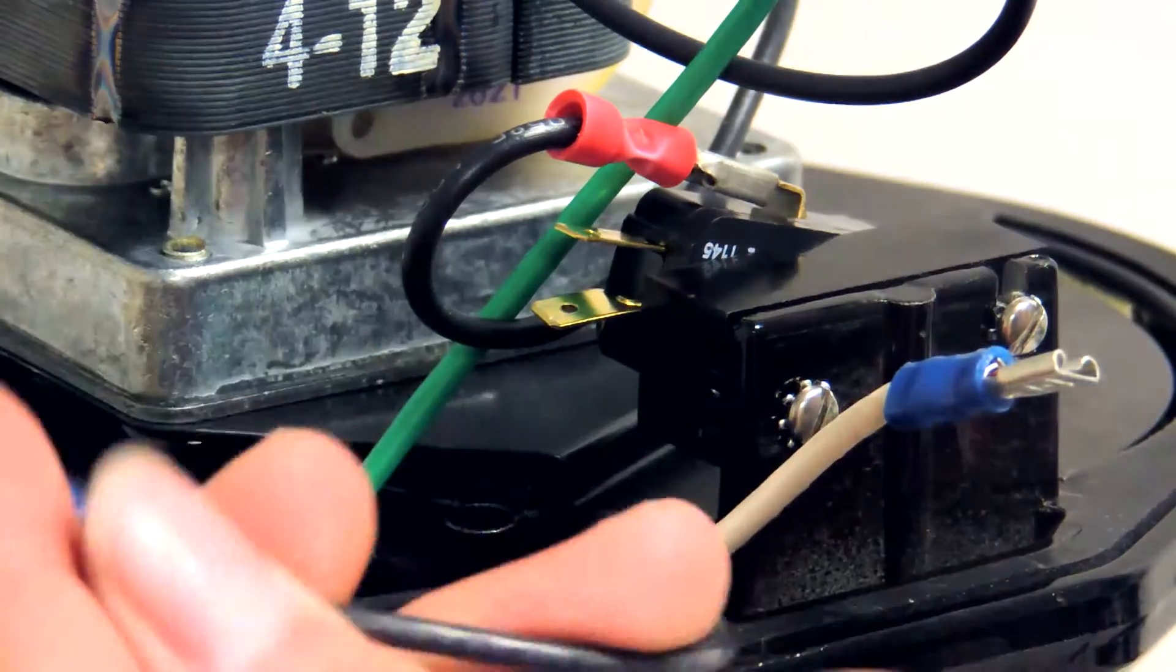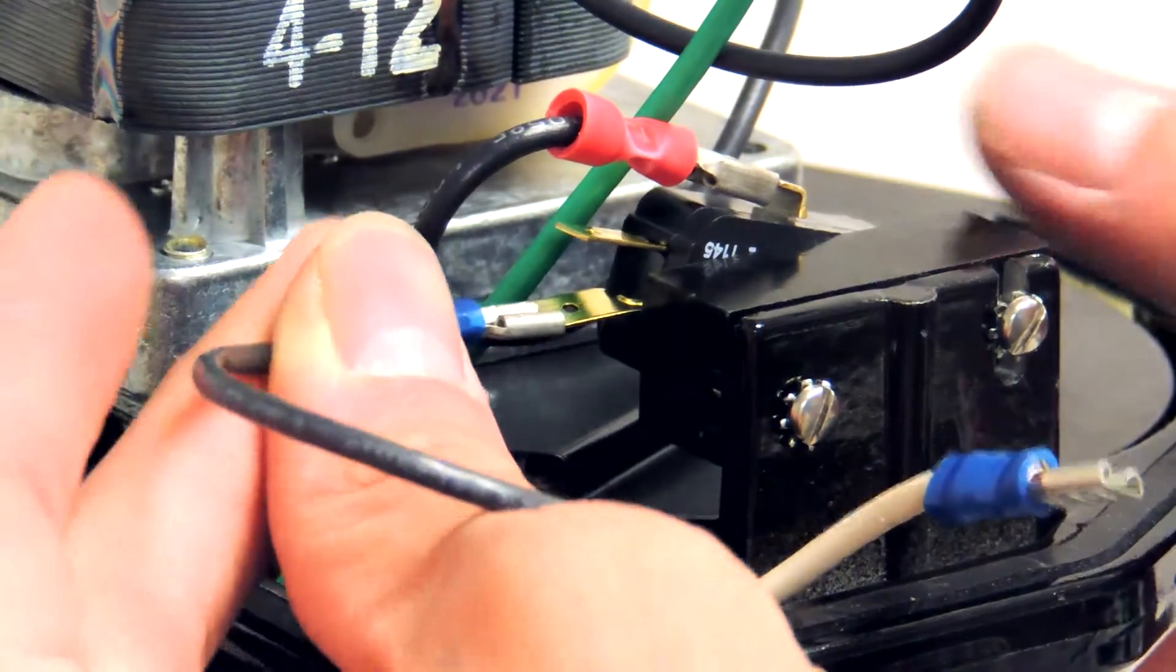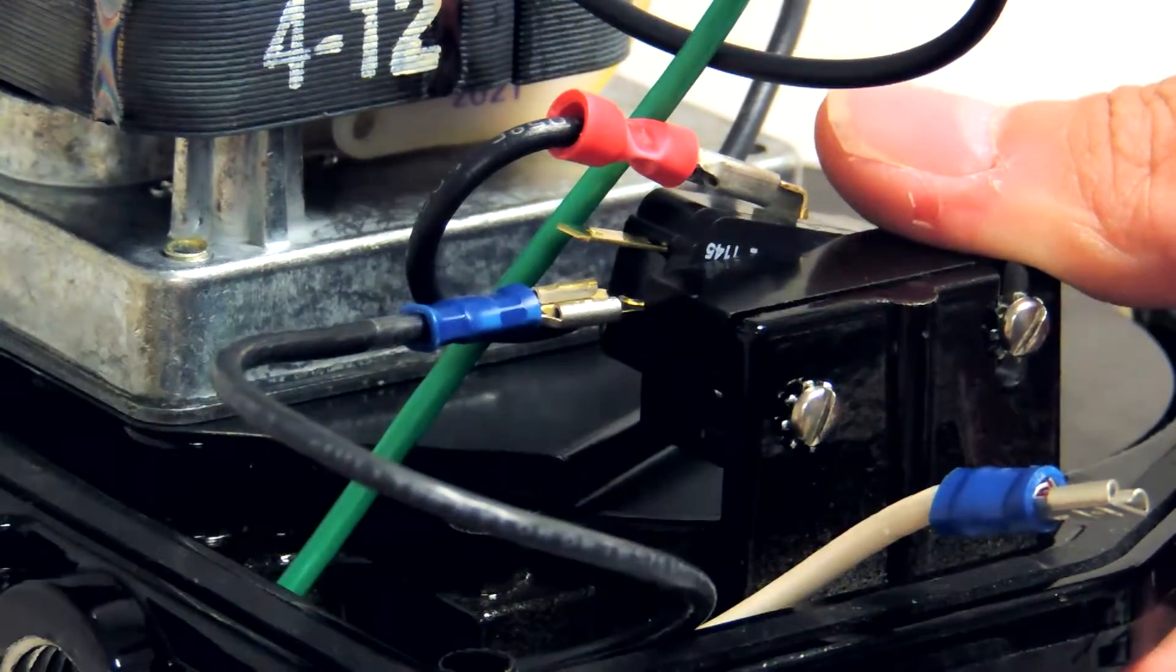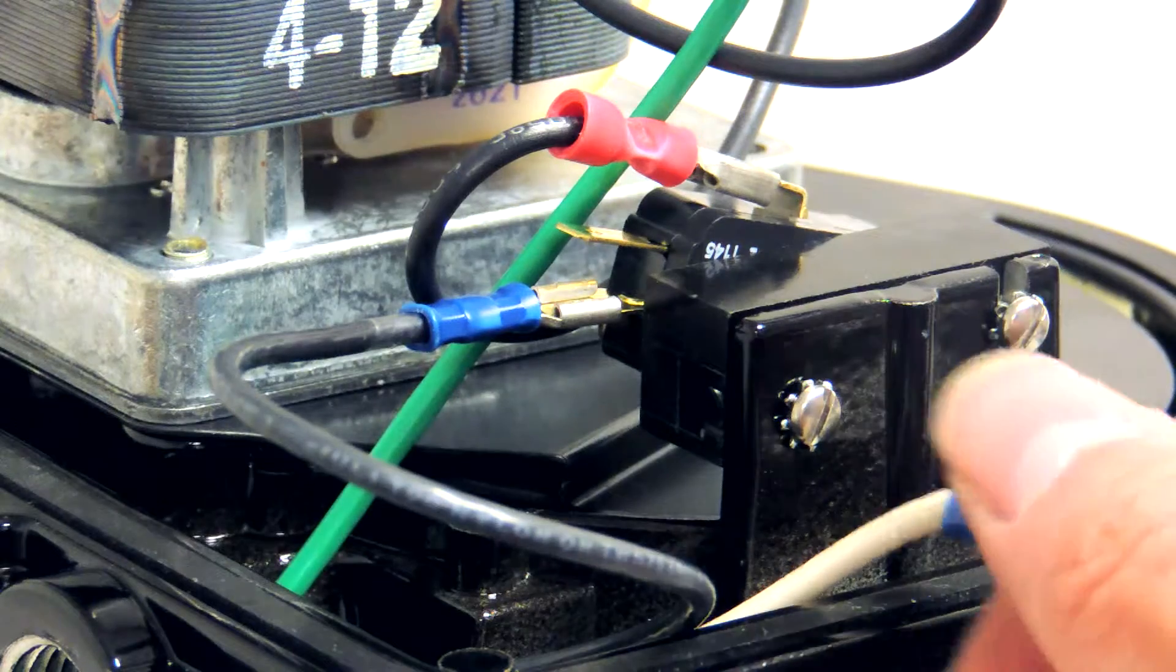Then, connect the black wire to the bottom connector on the switch, located on the side. Attach the white wire to the remaining connector.